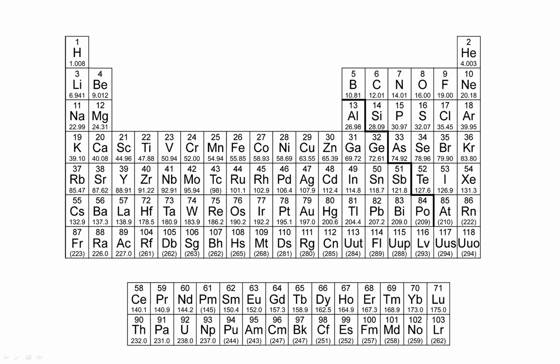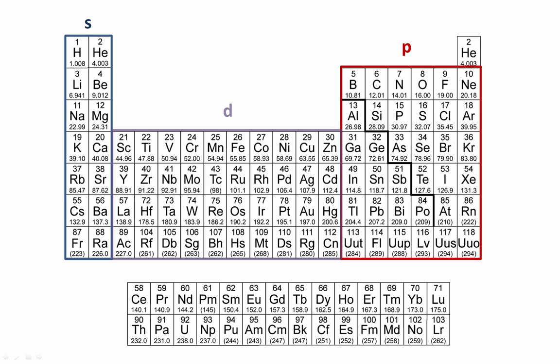We'll start with the periodic table. We can divide the periodic table by quantum blocks. The first two columns, including helium, make up the s block. The last six columns make up the p block. The transition metals make up the d block, and the inner transition metals make up the f block.